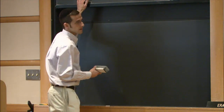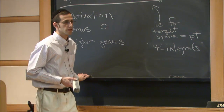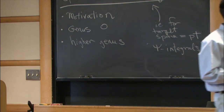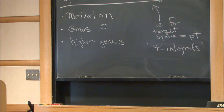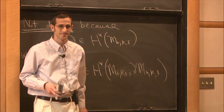Could I ask a question? You just told us that if you were to move the point to the boundary, then the corresponding line bundle would be... That's right. But the boundary of the moduli space is not the boundary of the surface.